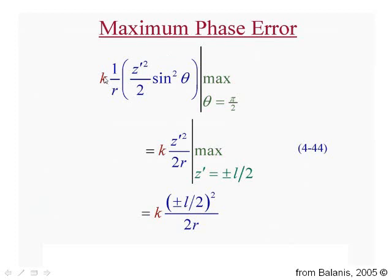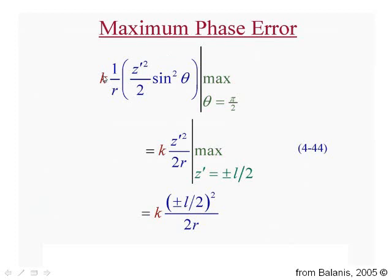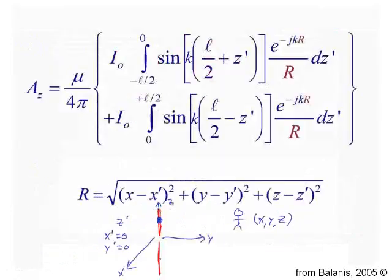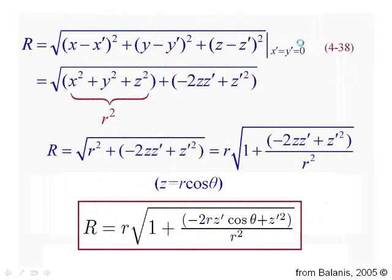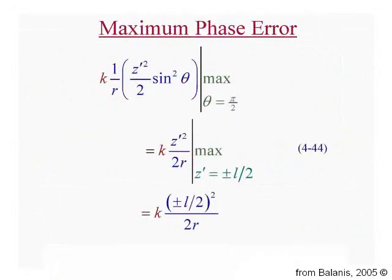Here's the next term in the Taylor series expansion, the one that we're ignoring. If I multiply it by k, because back in my integral, if you recall, I have e to the minus j k cap R. So k times cap R is going to give rise to a phase. And if I multiply k by this term we're neglecting, that gives rise to a phase error in the integral.